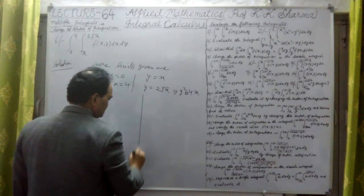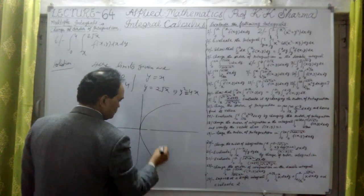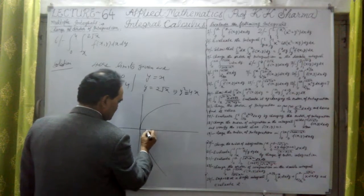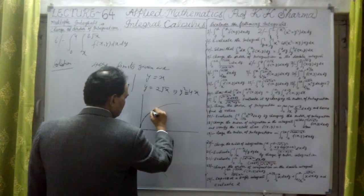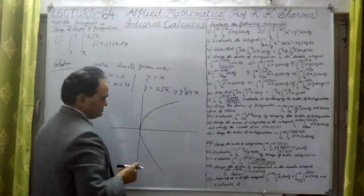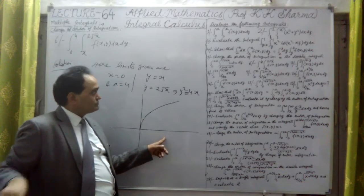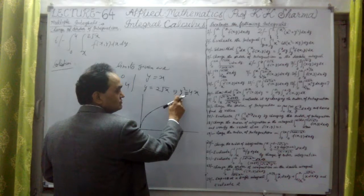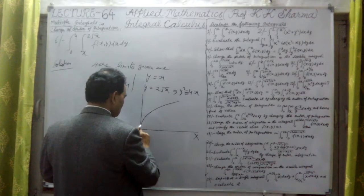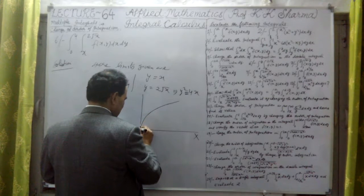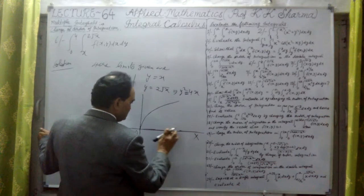The region given to us — let me show that. This is a parabola. This is given to us, in the first quadrant, which we have to take. The axis of the parabola is the x-axis. This is y equals 4x. Y values are positive, and this is x equal to 4.